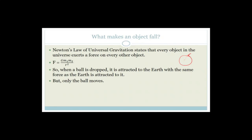So when a ball is dropped — let's say we have the earth and a really big ball that is dropped — it is attracted towards the center of the earth with the same force as the earth is attracted to it. That's Newton's third law and Newton's law of universal gravitation. But only the ball moves. Why is that? Because the force that the earth applies to the ball is called the weight of the ball, and the reason only the ball moves is because the earth is so massive.